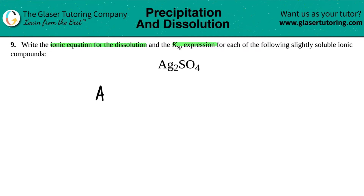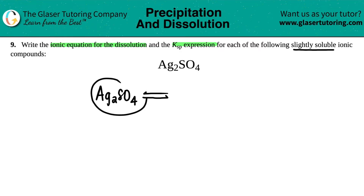So we have Ag₂SO₄. They did say that these compounds are slightly soluble. Slightly soluble means that at equilibrium — so I have to draw that double arrow — at equilibrium, you're going to have majoritively the compound that you started with, and that's the solid. So these are going to be starting off as solids.